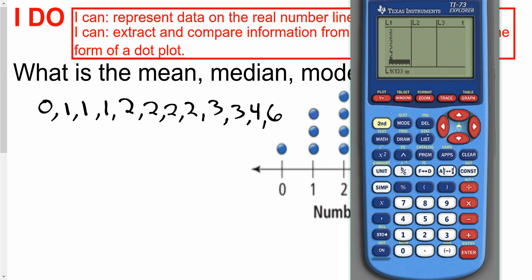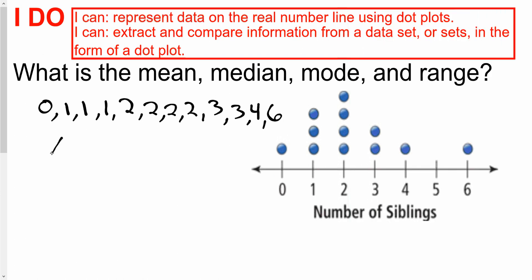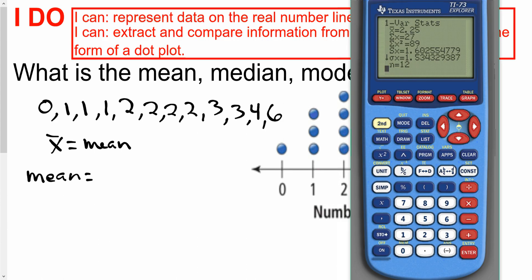All right, after that, we are going to go into the stat option here. It's in yellow, so I have to hit second list to get in the stats. We're going to go over to calc. And we're going to run the one var stats. That's option one there. Just hit enter. And this automatically looks at list one. So just hit enter again. You notice we talked about this in class a little bit. So x bar is the mean. So the mean is, looks like 2.25.